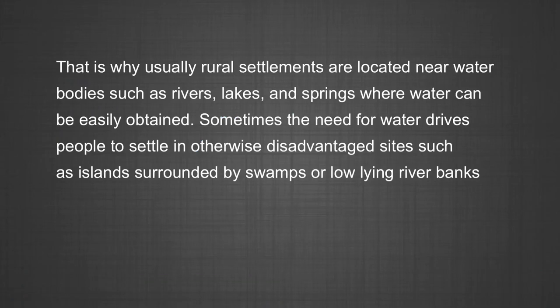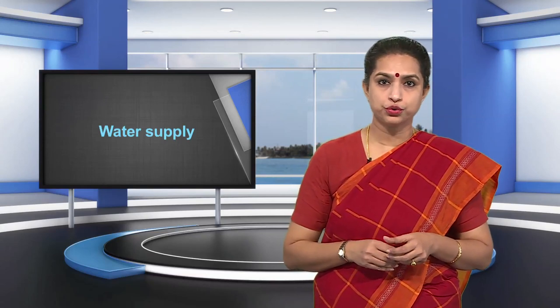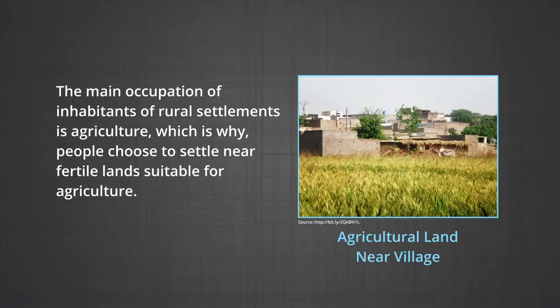That is why rural settlements are usually located near water bodies such as rivers, lakes, and springs where water can be easily obtained. Sometimes the need for water drives people to settle in otherwise disadvantaged sites such as islands surrounded by swamps or low-lying river banks. Most water-based or wet point settlements have many advantages due to the availability of water for various uses. The next factor affecting location of rural settlements is land.